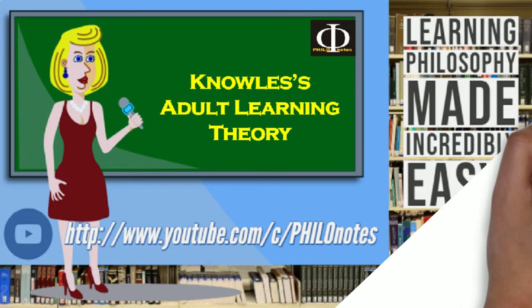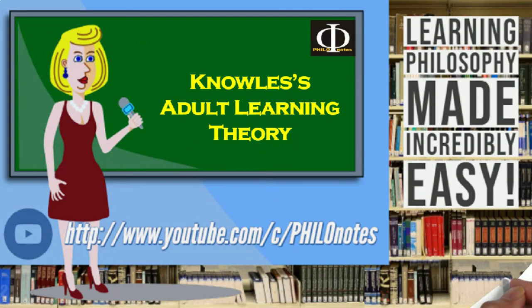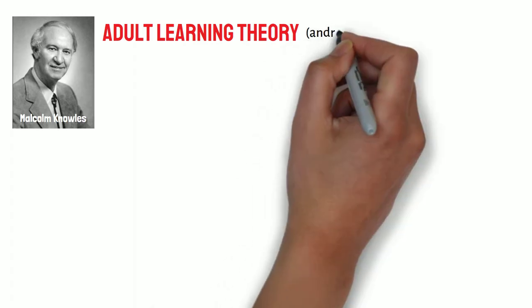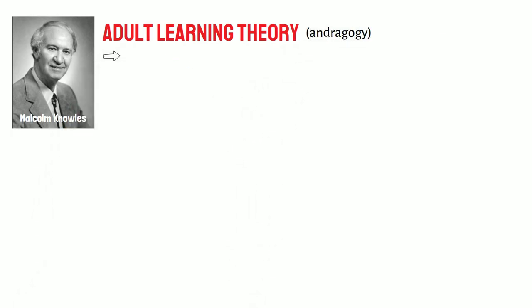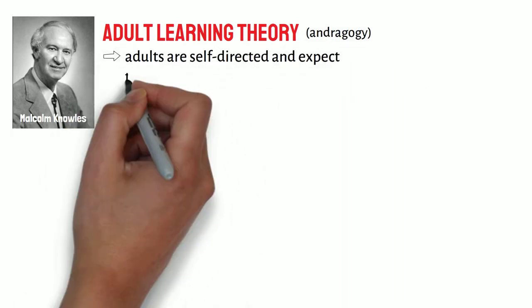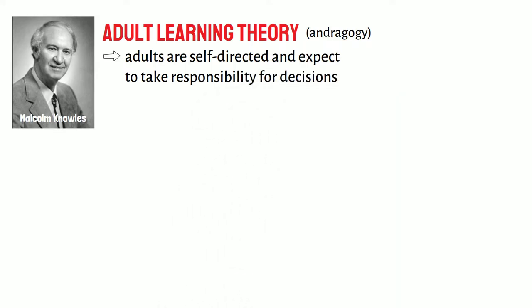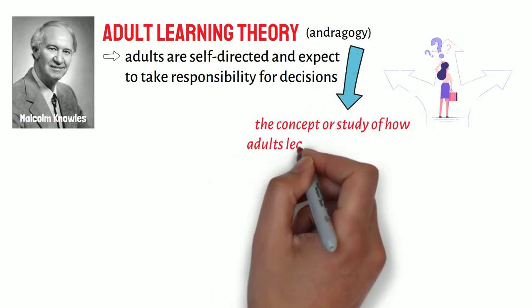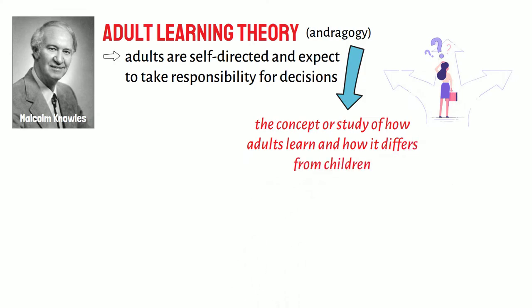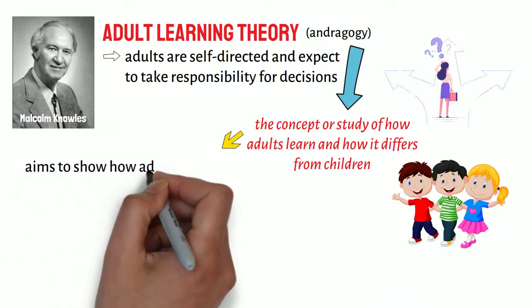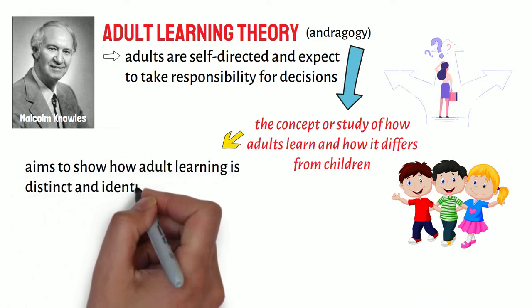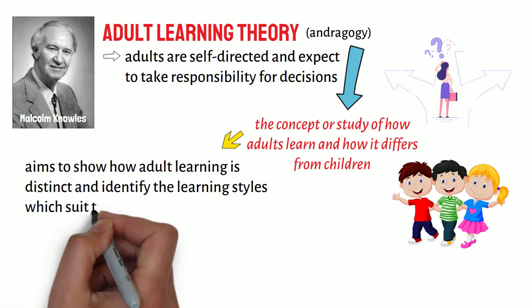Malcolm Knowles's Adult Learning Theory, or Andragogy, emphasises that adults are self-directed and expect to take responsibility for decisions. Andragogy is the concept or study of how adults learn and how it differs from children. It aims to show how adult learning is distinct and identify the learning styles which suit them best.